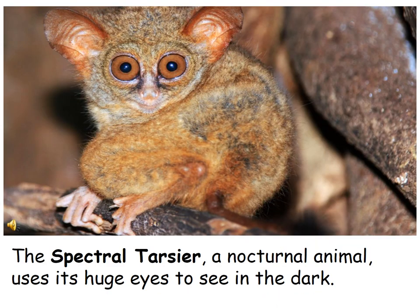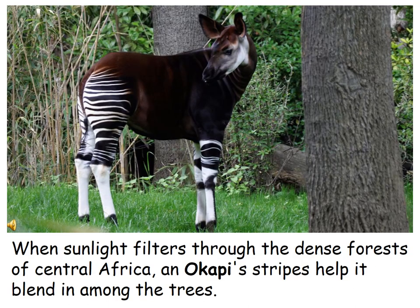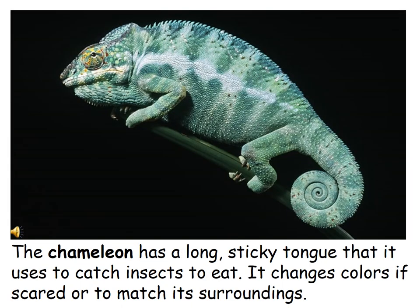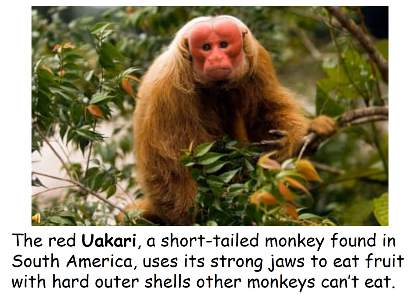The spectral tarsier is a nocturnal animal that uses its huge eyes to see in the dark. The okapi — not a zebra — when sunlight filters through the dense forests of Central Africa, its stripes help it blend in among the trees. It is related to a giraffe. The chameleon has a long, sticky tongue that it uses to catch insects to eat, and it changes colors if scared or to match its surroundings.